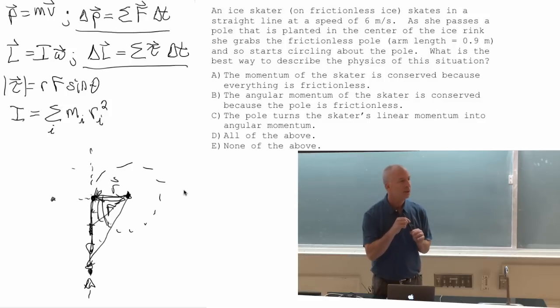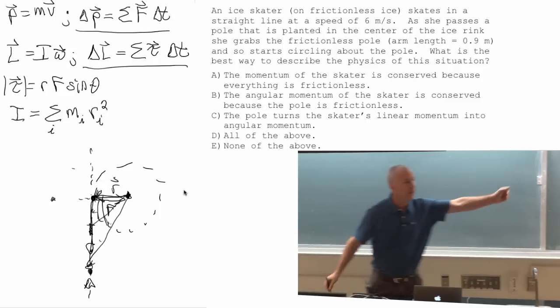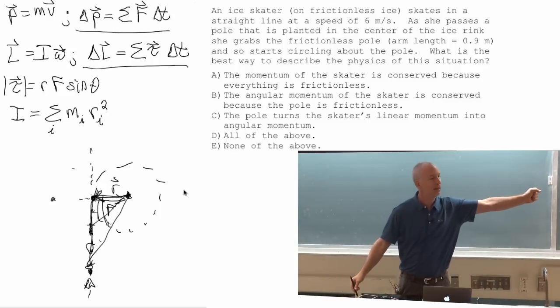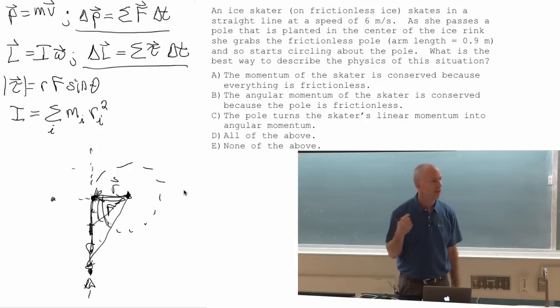So how would this point be different if there was friction in the pole that she grabbed? Then after she grabbed that, you probably know that she would start circling, but she would slow down and eventually stop.